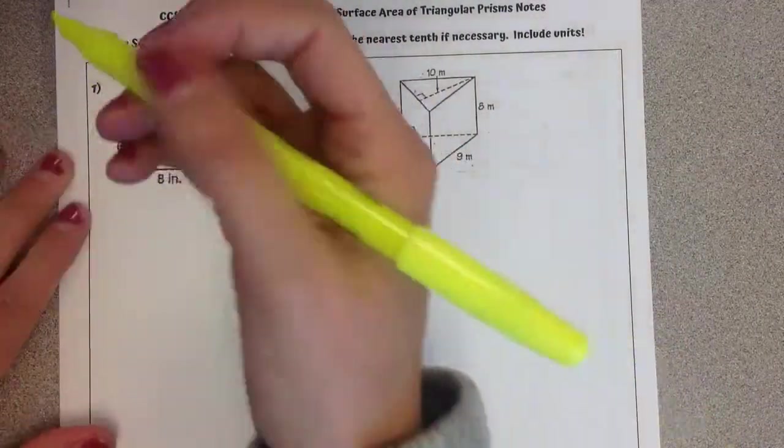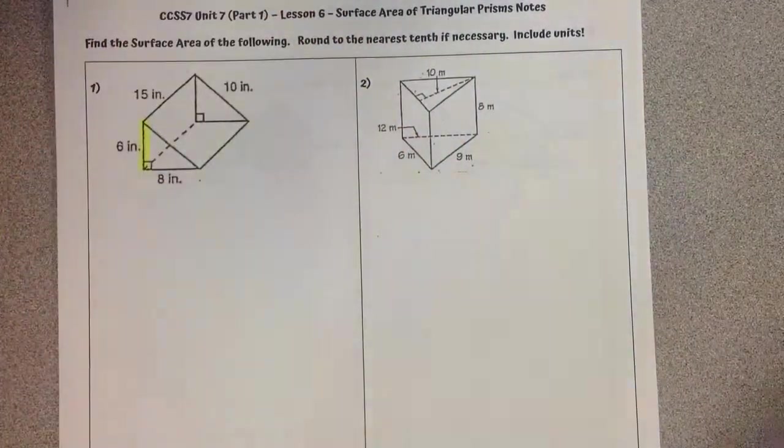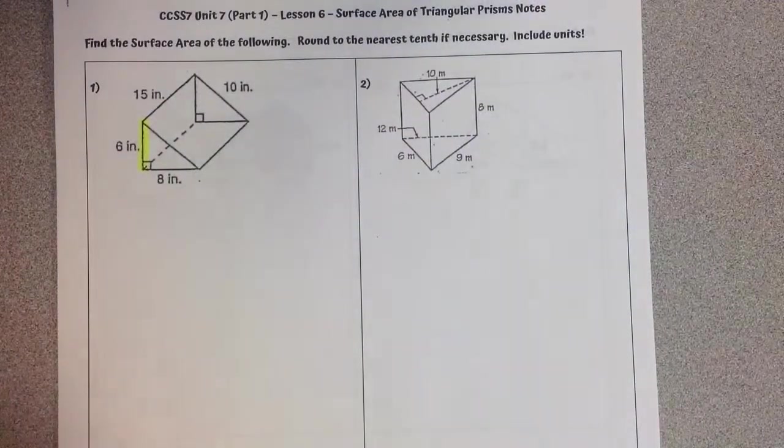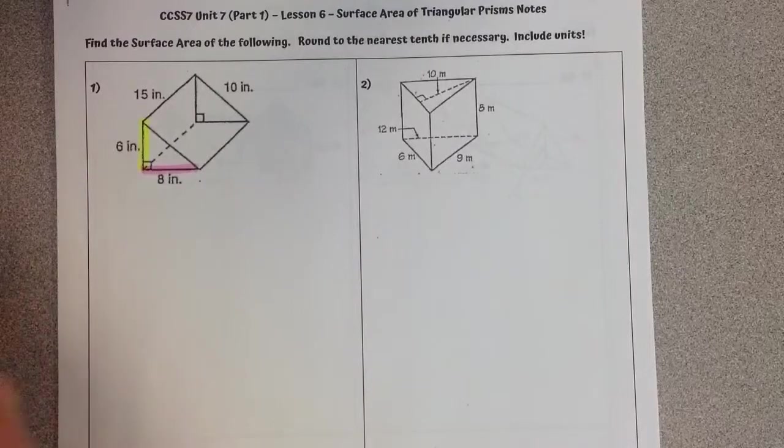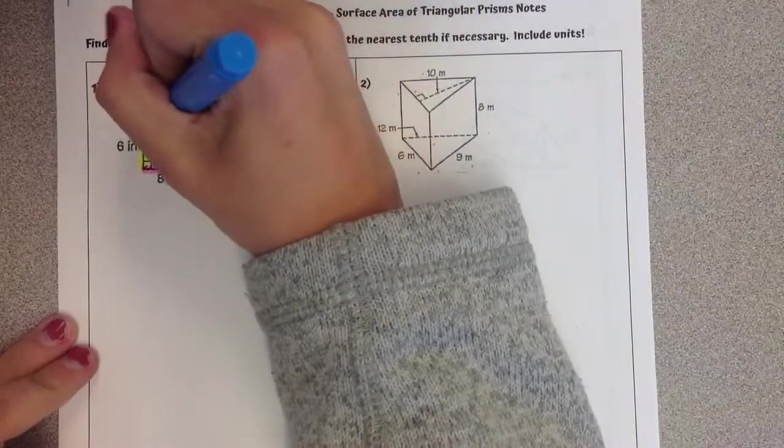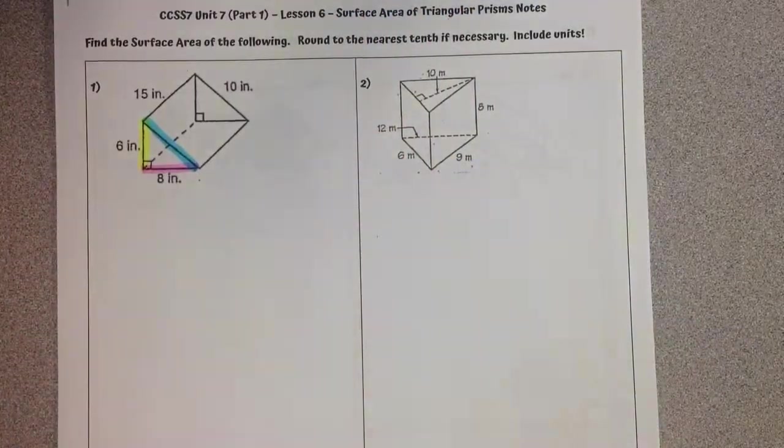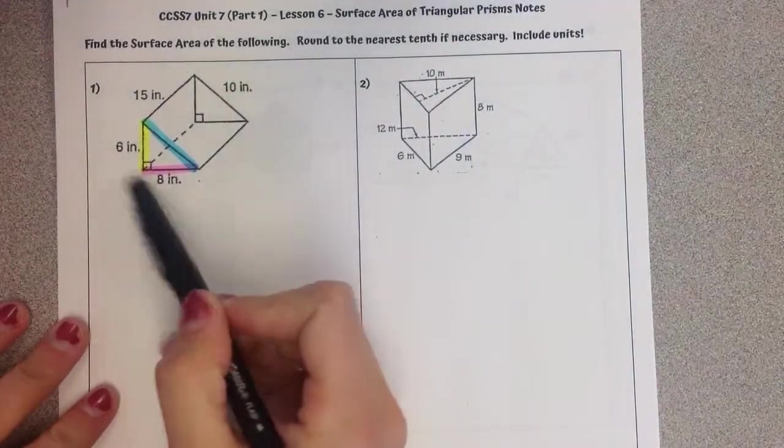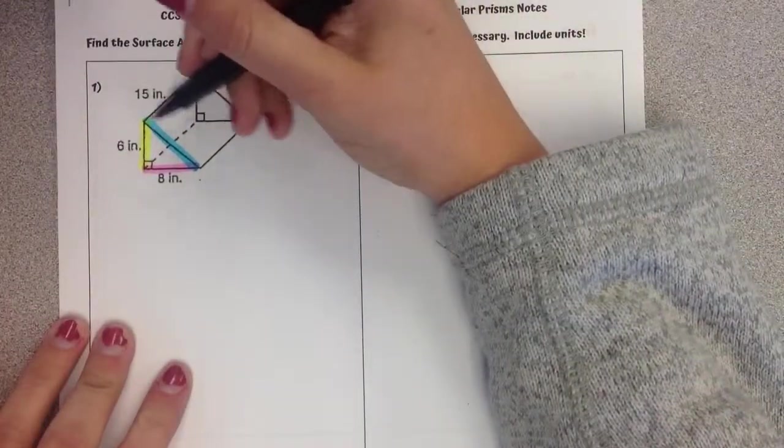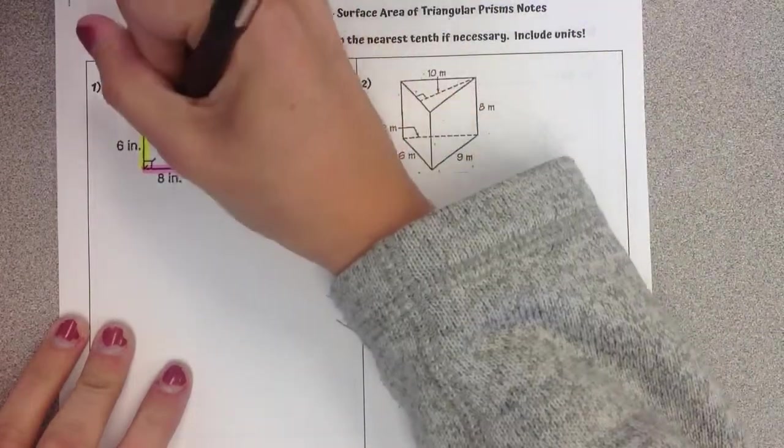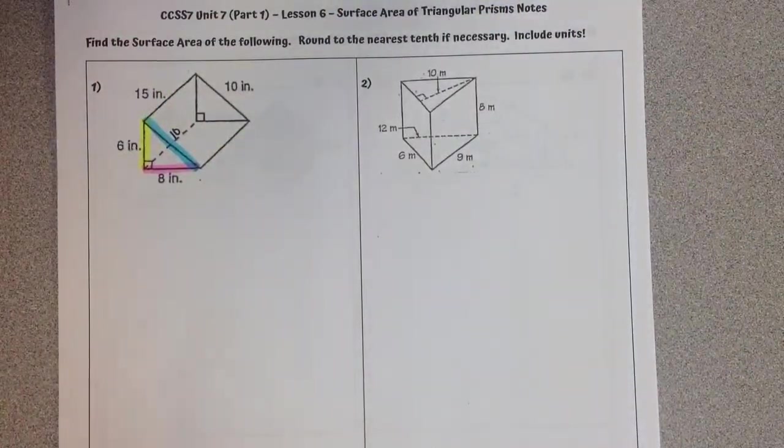So the first thing I'm going to do is I'm just going to identify the three side lengths in my triangle. So these two sides are already identified, 6 and 8. This side right here doesn't have a measure, but it's just going to be the same as the one on the opposite side. So it's a 6, 8 by 10.